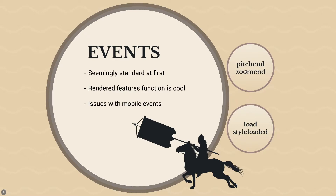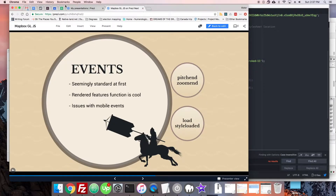Mapbox has a few special events such as pitch and zoom. Pitch-end fires whenever the user changes the view angle. We also have the load event, which we've seen - in order to add a style or a layer to the map manually, we have to do it after the map fires off a load event. Let's go look at the Mapbox events.